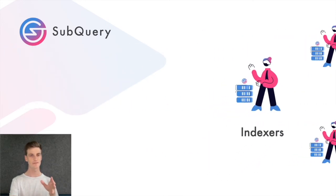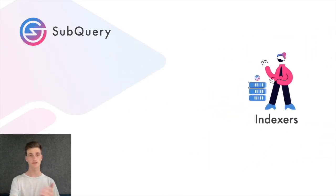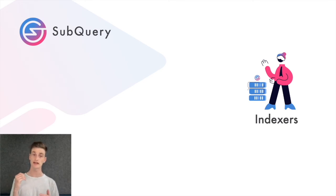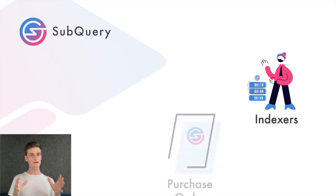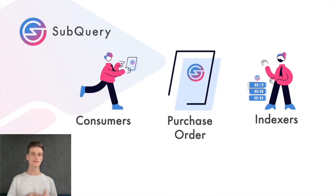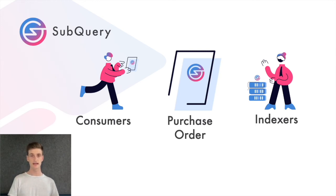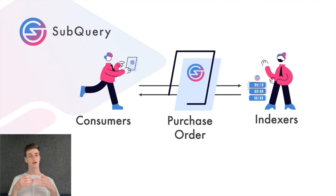Indexing a project takes time and money. There's a lot of data on-chain, and in order to encourage indexers to take a risk to index and support an entirely new SubQuery project, we plan to implement a market mechanism. We're calling them purchase orders, and consumers can advertise a contract on-chain for a set price and a set number of requests. Indexers can see that, and then choose to do the work to index that data to take and fulfil that contract.